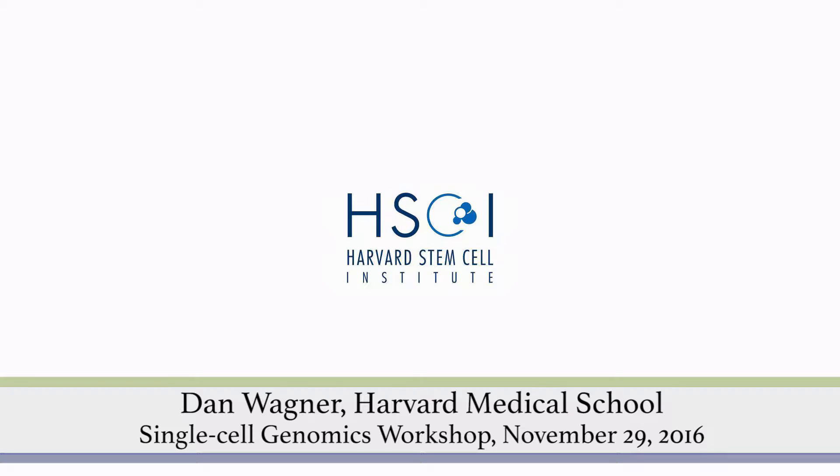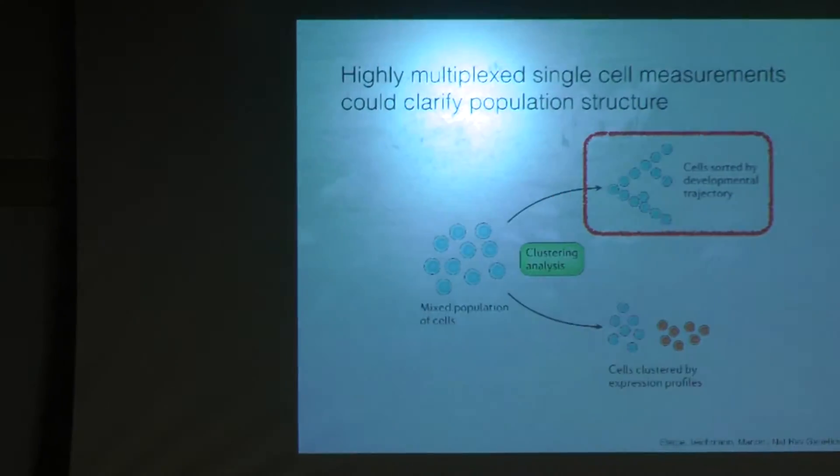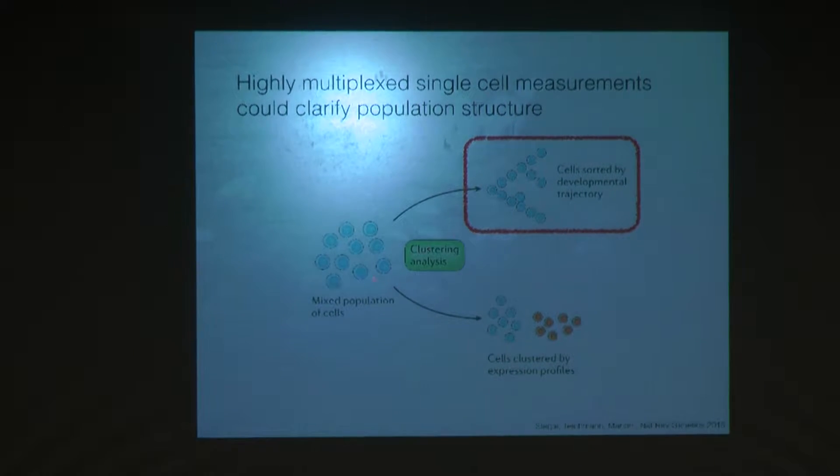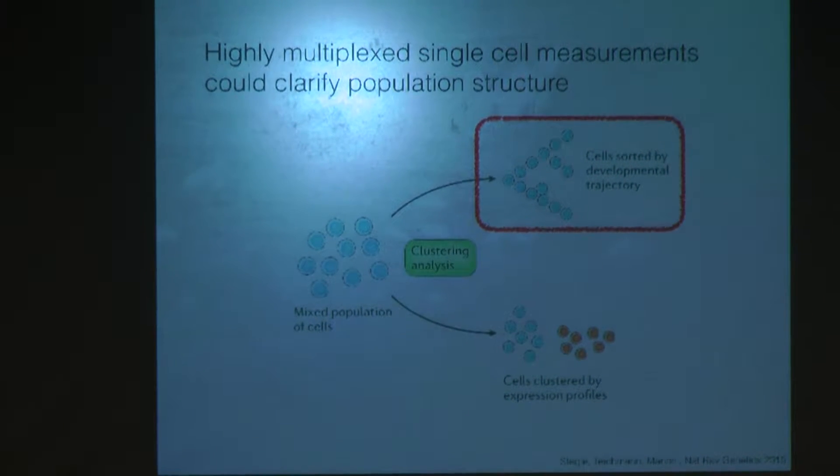We all know that single-cell profiling is immensely powerful for clarifying the structure of a cell population. Typically this exercise comes in at least two flavors: we can resolve discrete cell types by clustering, and we can resolve more dynamic processes by assembling a series of single-cell snapshots as cells are asynchronously performing some task, and seeing if we can reconstruct a picture for how this process is happening.